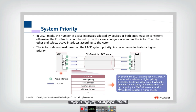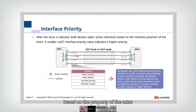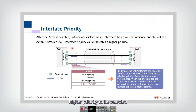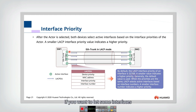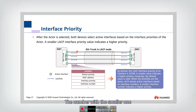After the actor is selected, the interface priority should be compared to select the active interface. Both devices select active interfaces based on the properties of the actor. A smaller LACP interface priority indicates higher priority to be selected. The default priority is also a specific number. If you want a certain interface to have higher priority to be selected as active, you can manually change the priority to a lower number. If there are multiple interfaces with the same priority, then we compare the interface number.